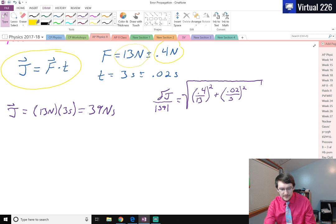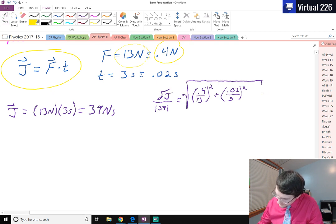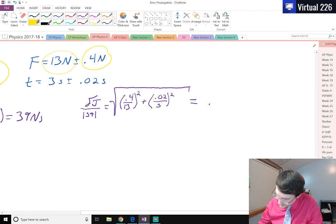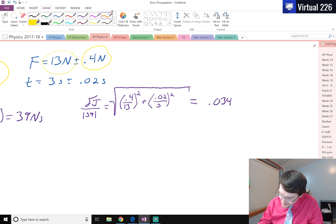When I square it I get 9.4 times 10 to the minus 4. 0.02 divided by 3 squared, added to that gives me 9.91 times 10 to the minus 4. And when I take the square root of that quantity I find out that del J over 39 equals 0.034.